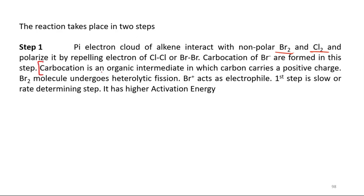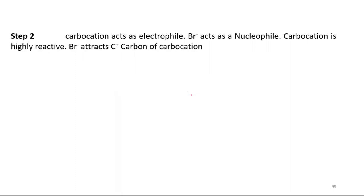Carbocation is an organic intermediate in which carbon carries a positive charge. And Br2 molecules undergo heterolytic fission. Br positive acts as electrophile. The first step is slow or rate-determining step, and it has a higher activation energy. After that, carbocation acts as electrophile and Br negative acts as a nucleophile. Br negative attacks the carbon positive of the carbocation.